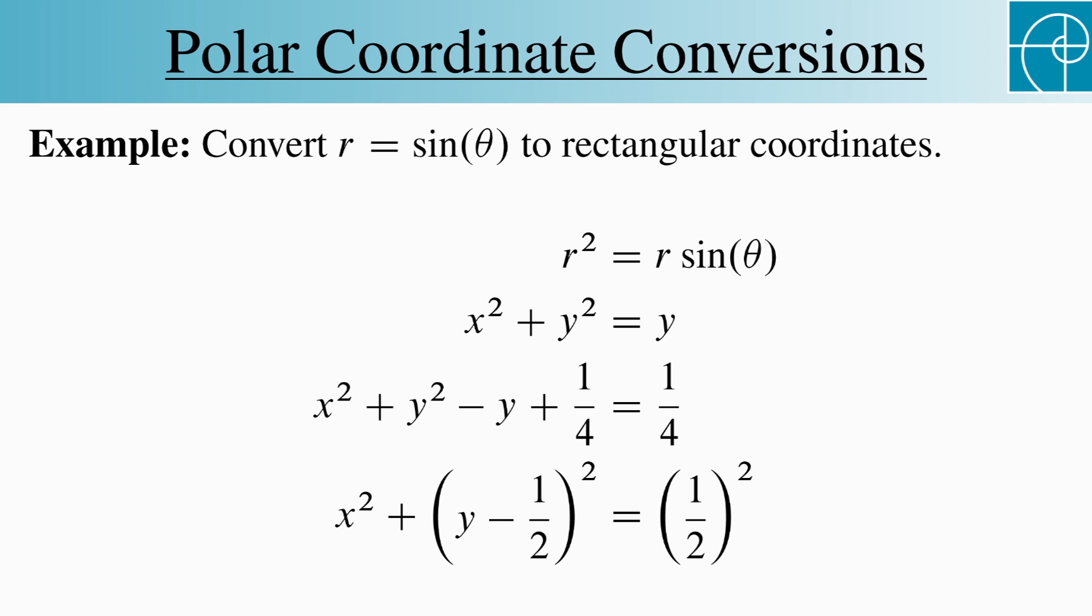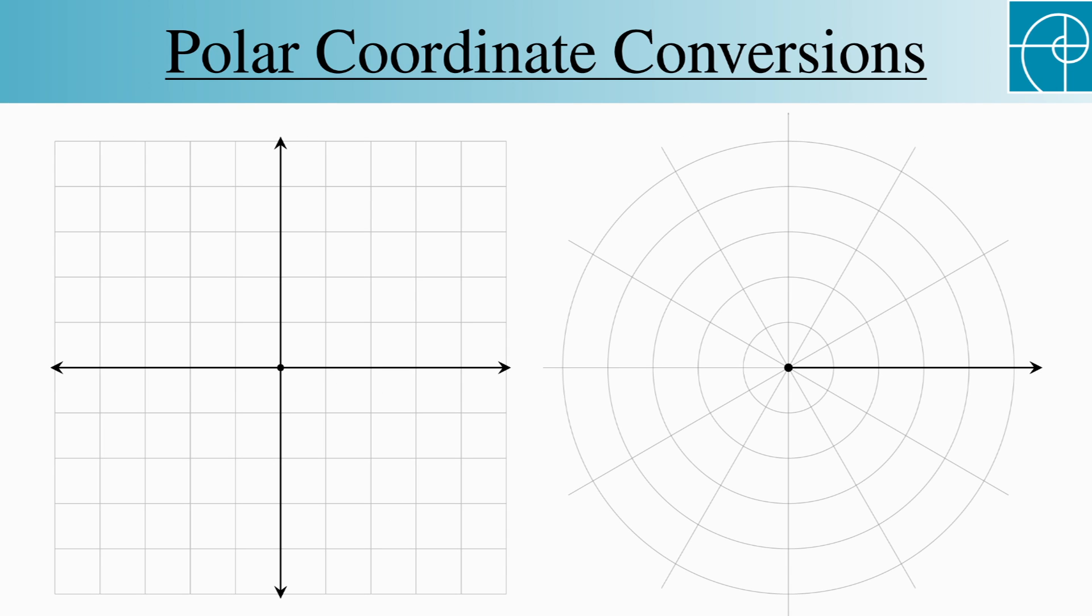There's another way that we think of converting from rectangular to polar coordinates, and it's actually something we've already used when we graphed polar functions. We relabel the Cartesian plane using theta and r. This gives us a correspondence between horizontal lines in the rectangular system and circles in the polar system centered at the origin.